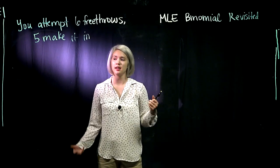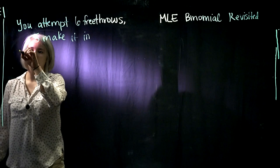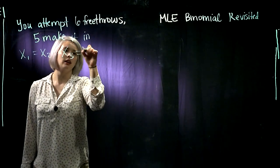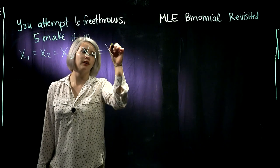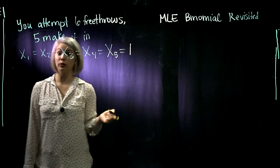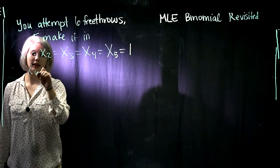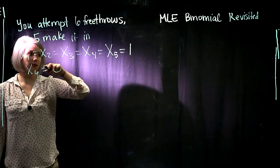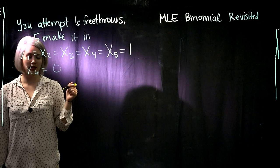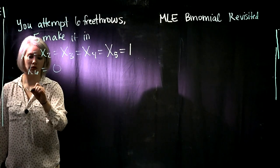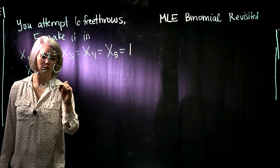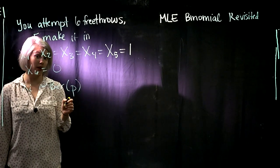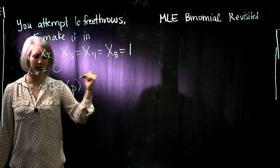Remember we had 6 shots, 5 of them make it in. So we could imagine x1, x2, x3, x4, and x5 are all equal to 1 because we make it in, and then x6 is equal to 0. We know that each one of these x's has a Bernoulli distribution with some unknown parameter p — p is the probability of making it in.